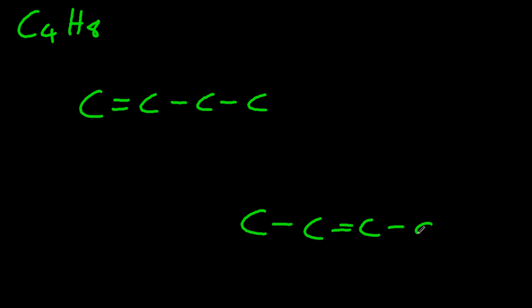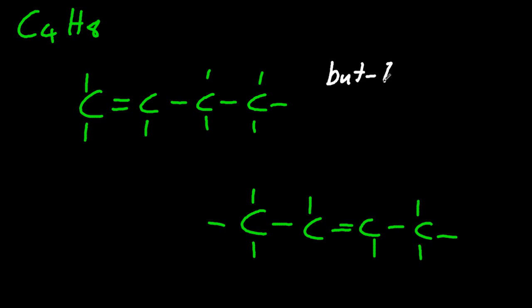Butene — you can put the double bond at the beginning or in the middle. So there are two isomers that are alkenes of butene that are linear.